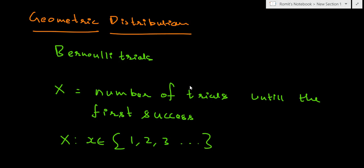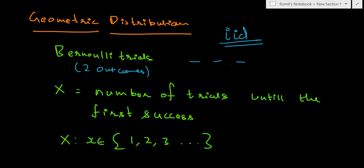The next distribution we have is called the geometric distribution. Again you have Bernoulli trials occurring one after the other, and X models the number of trials until the first success. There is no upper limit on the trials — you keep on going, perhaps tossing a coin, since with Bernoulli trials there are only two possible outcomes: success and failure. Each trial is IID — independent and identically distributed. The outcome of one does not influence the other, and for each trial the probability of success is P and the probability of failure is 1 minus P.